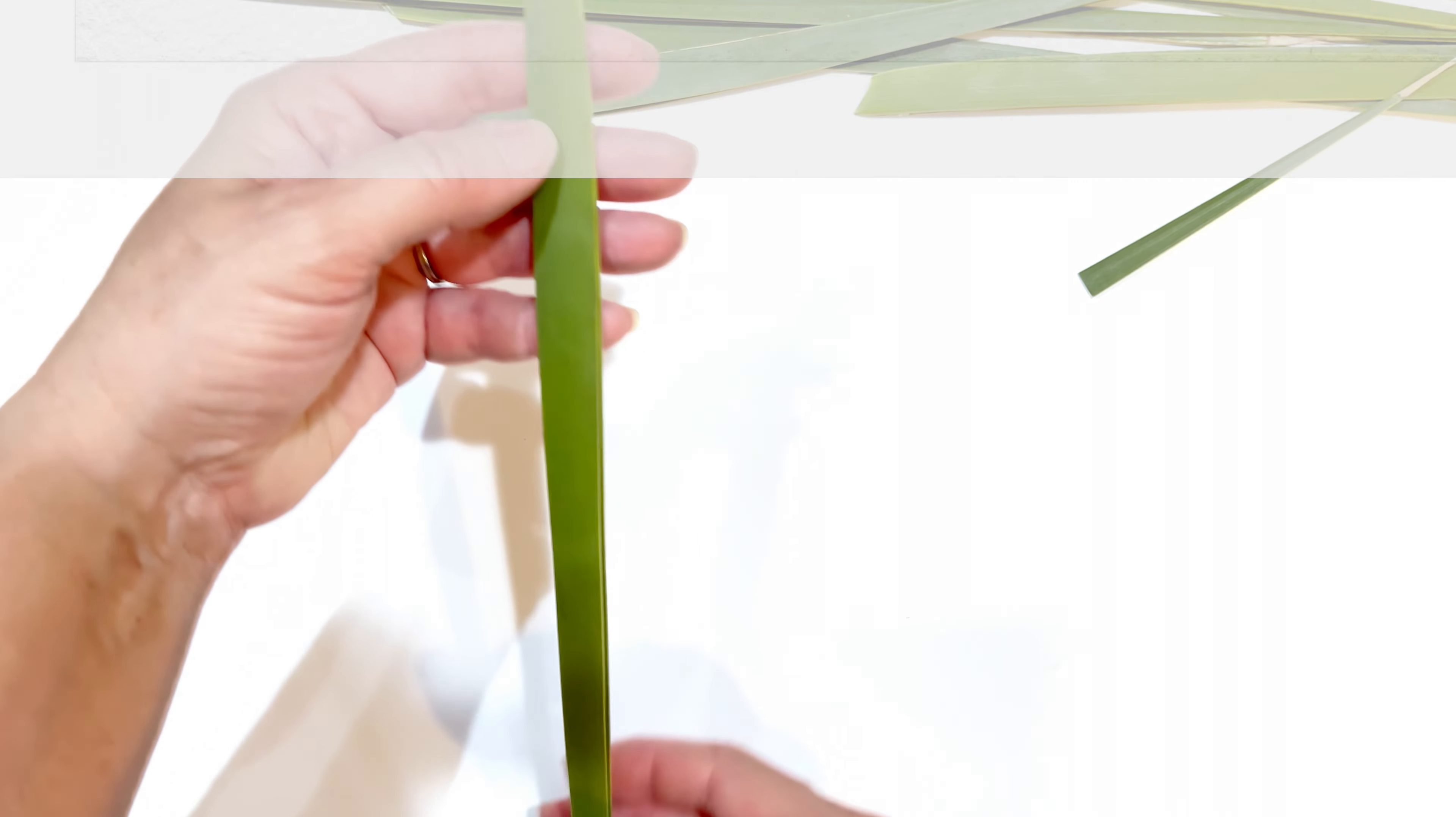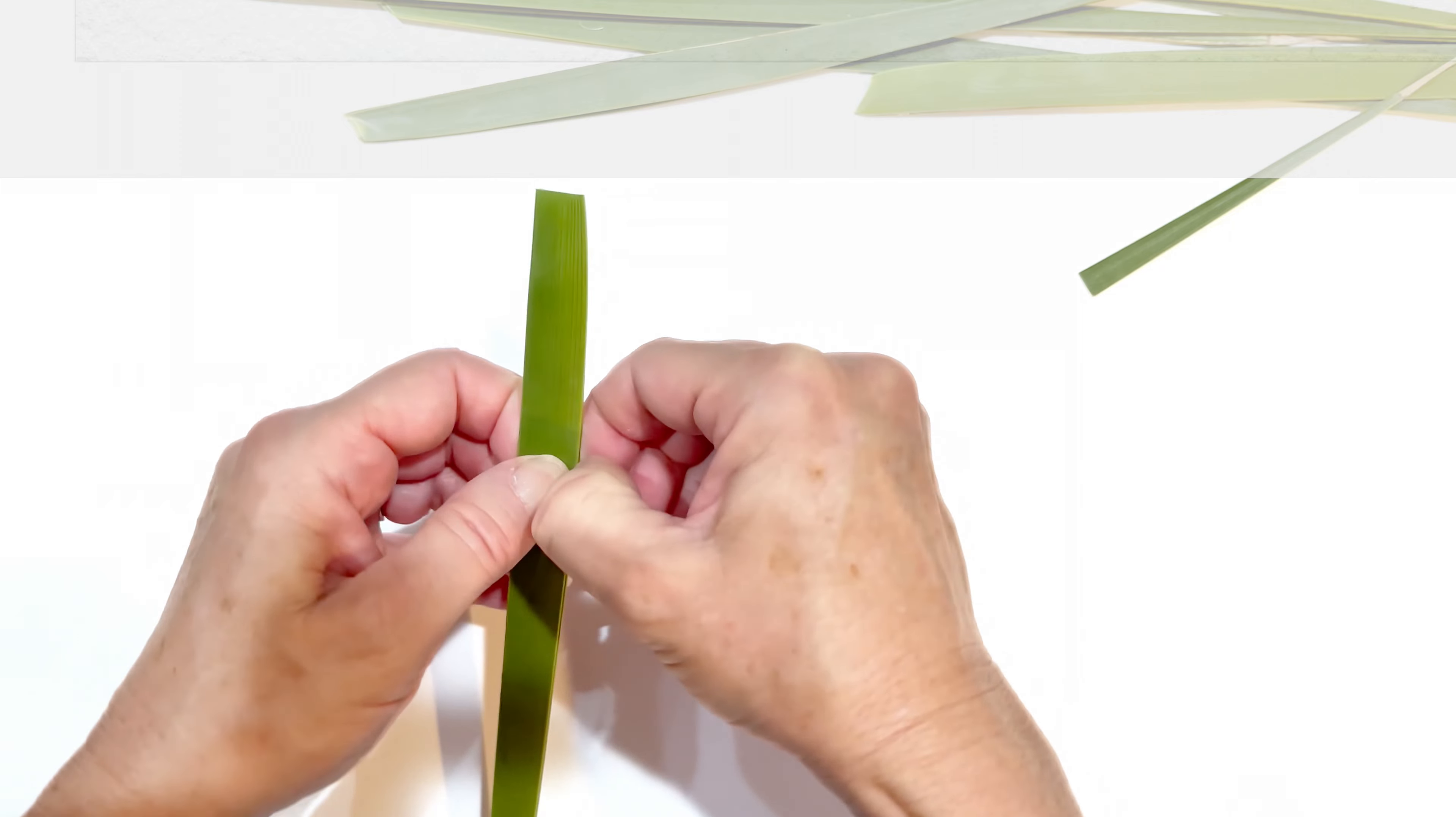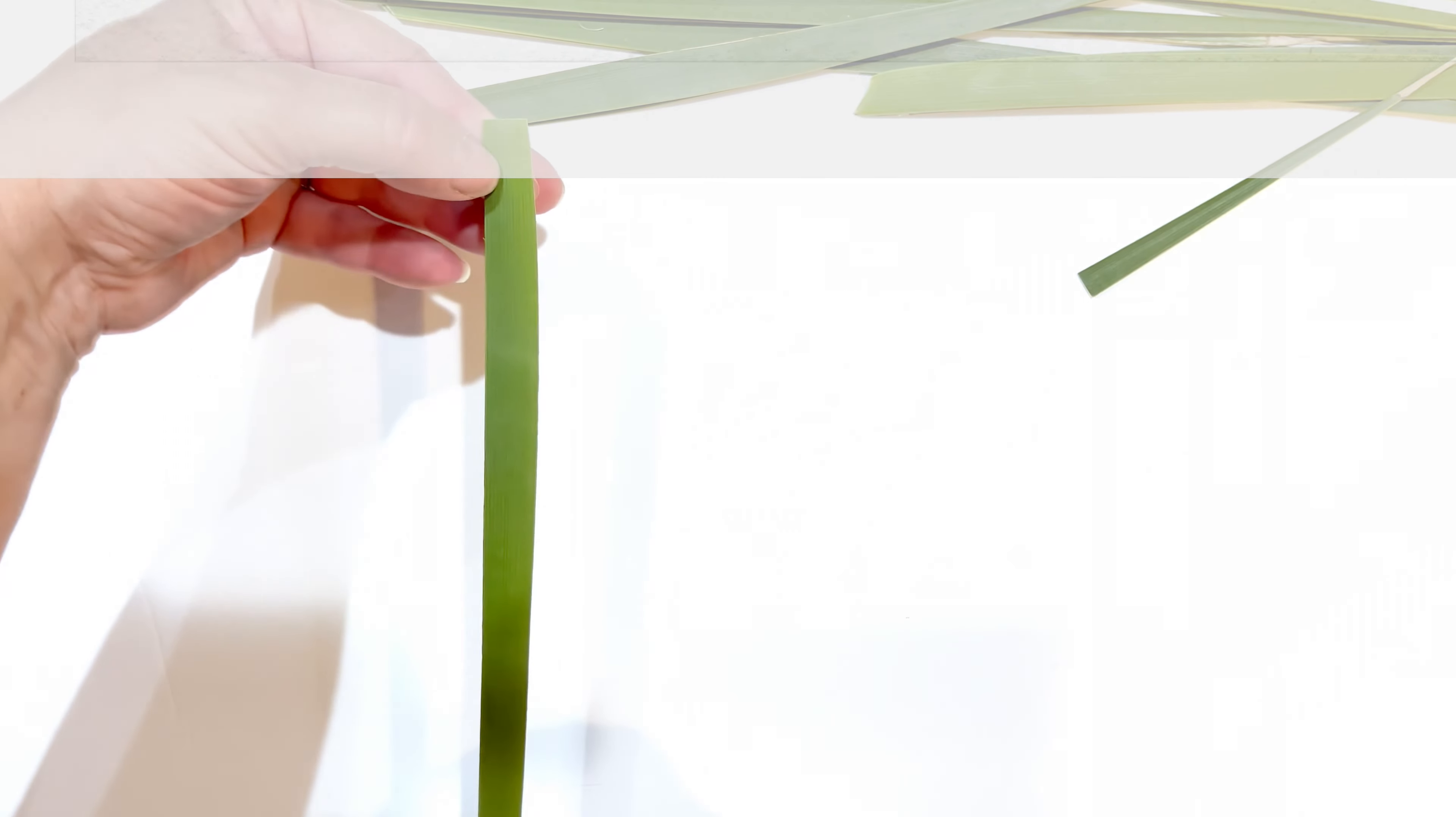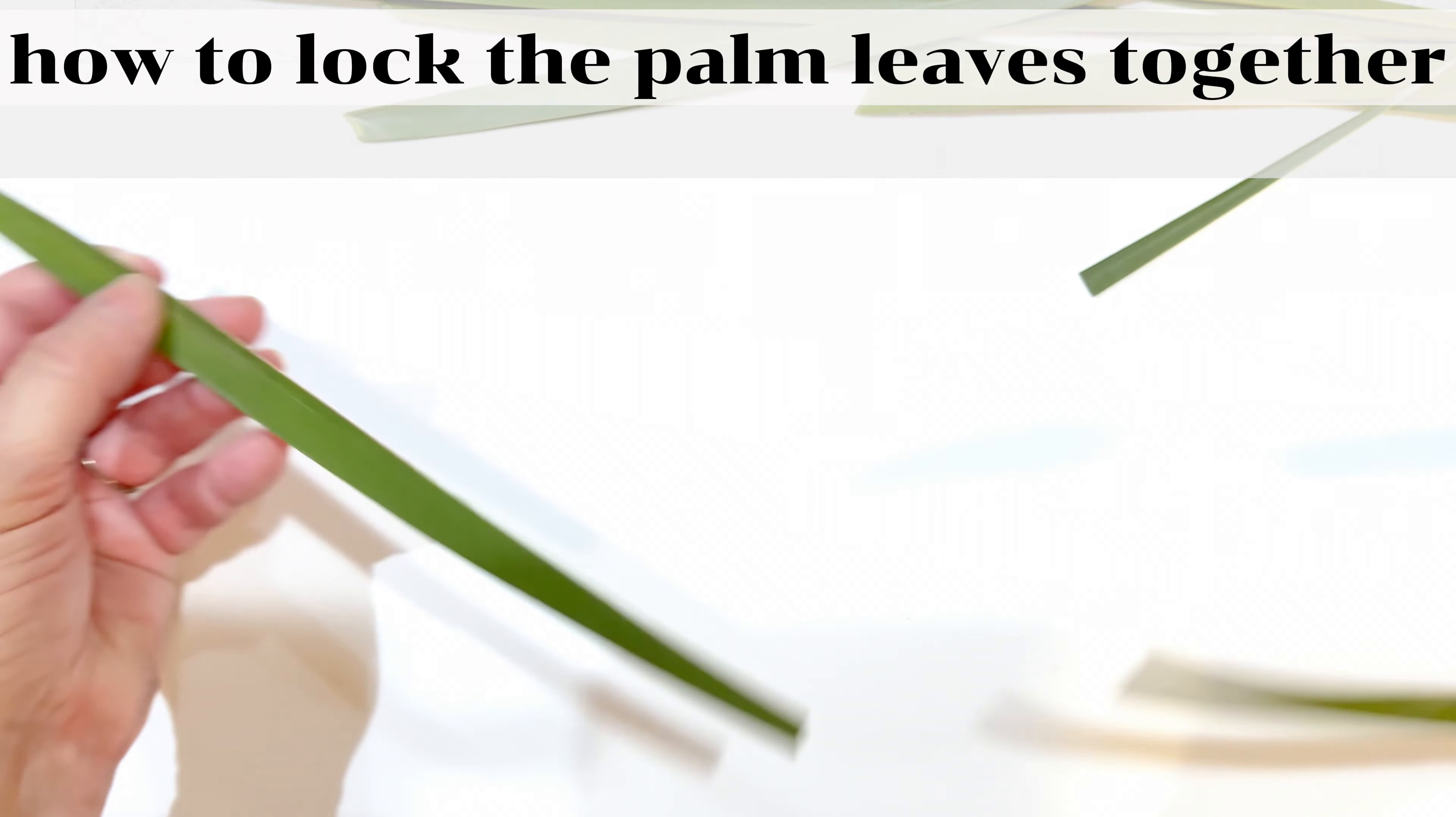We can thin out the thicker part of the leaf by just pulling gently on the sides and tearing it off. Next, tear the two leaves apart, and now we're ready to begin weaving our crosses.